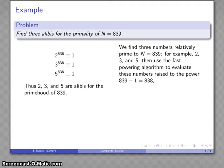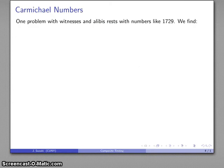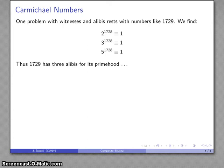Consider 1729. I find 2^1728 ≡ 1, 3^1728 ≡ 1, 5^1728 ≡ 1, and so on. I have alibis that 1729 is prime: 2, 3, and 5 all say yes, this is prime.